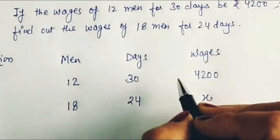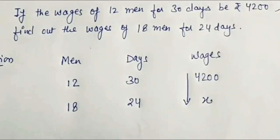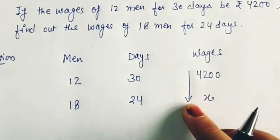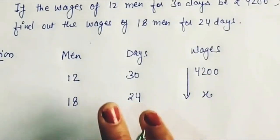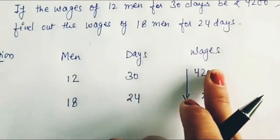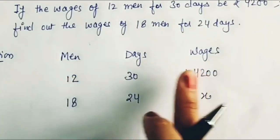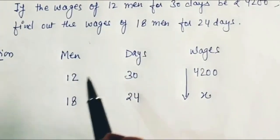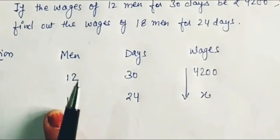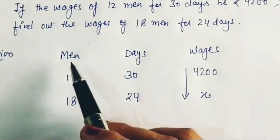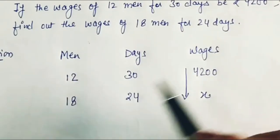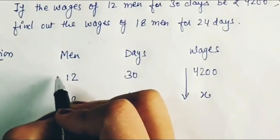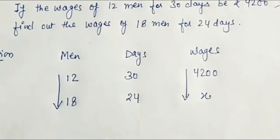In the second step, by default our arrow pointer points towards the unknown quantity. Next, we need to compare the other two quantities with this unknown quantity — we compare men and days with wages one by one. When comparing men and wages, 12 men's wages are Rs. 4200. For 18 men, wages will obviously be more since the number of men has increased, so wages also increase. Therefore, the arrow pointer points towards the bigger digit — between 12 and 18, the pointer goes towards 18.